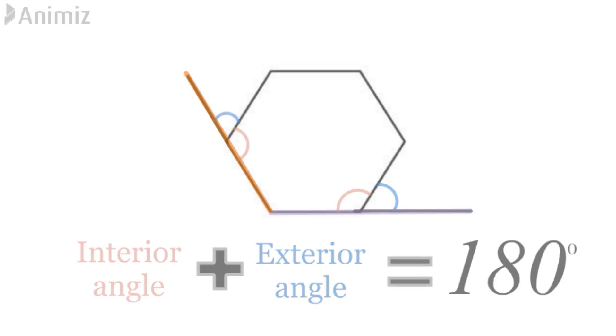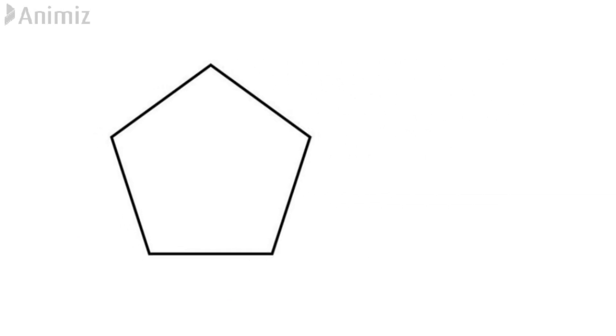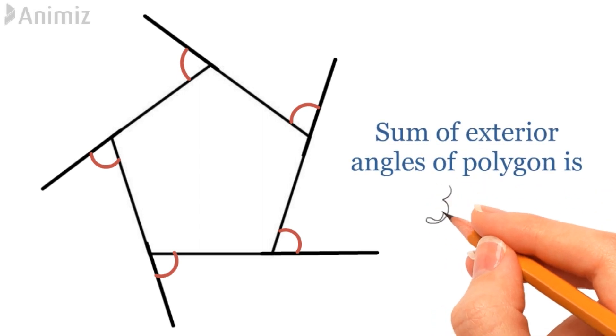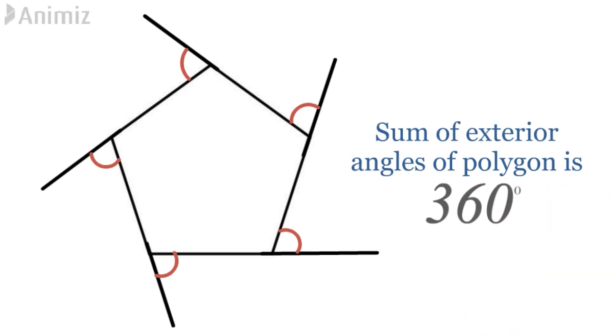Last thing that we'll discuss today is about the sum of exterior angles of a polygon. As you can observe over here, by extending the sides of polygon, we have got its exterior angles. The sum of all exterior angles of a polygon is equal to 360 degree.